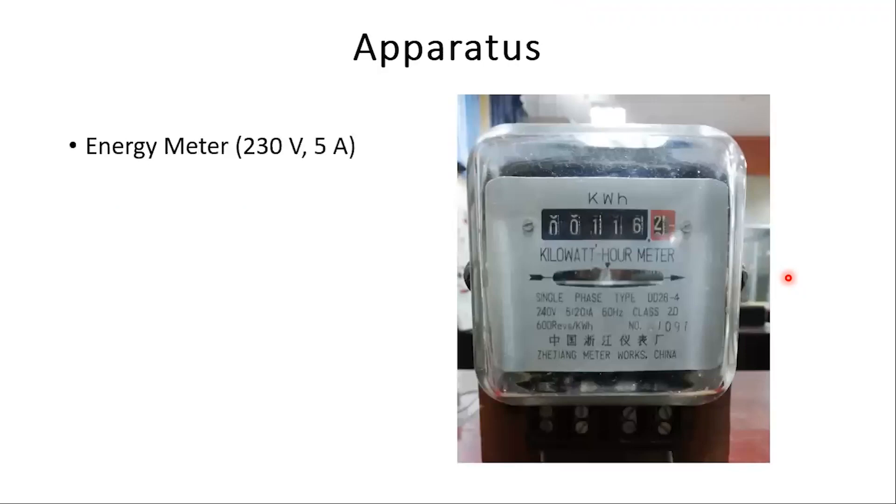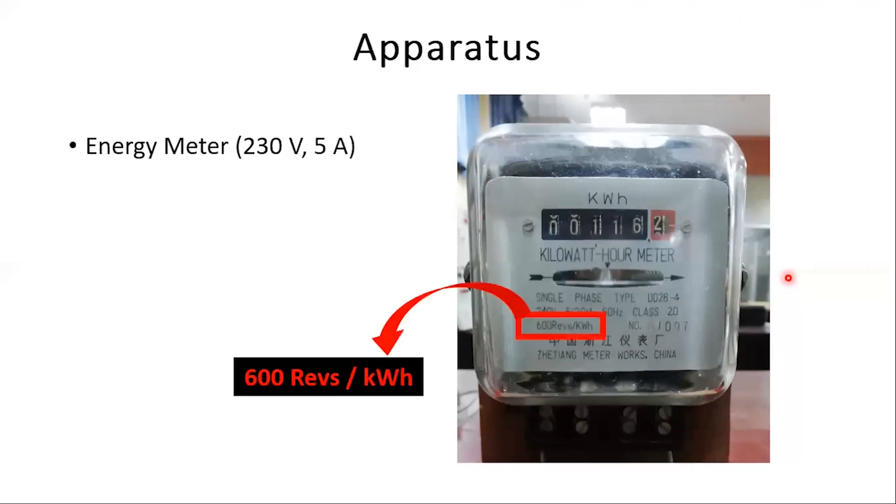The apparatus used for this practical is fairly simple. We use an energy meter rated for 230 volts and 5 amperes. Note down the meter constant which is marked along with the ratings of the meter. In this case, it is 600 revolutions per kilowatt hour.